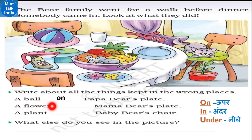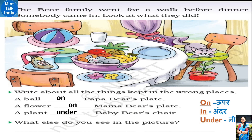Uske baad: a flower is on mama bear's plate - mama bear ke plate ke upar kuch phool pade hue hain. Aur last wala: a plant is under baby bear's chair - baby bear ke chair ke neeche ek chhota sa plant hai, paudha hai. What else do you see in the picture? Hume picture mein ek mouse bhi nazar aata hai, jug ke andar ek juta nazar aata hai. So we will write: We can see a shoe inside the jug. We can see a mouse in the fruit bowl.